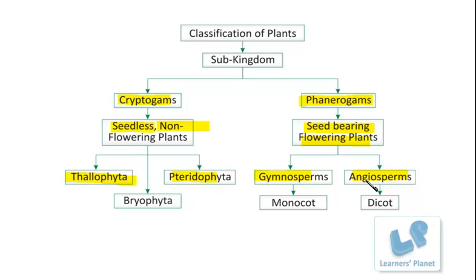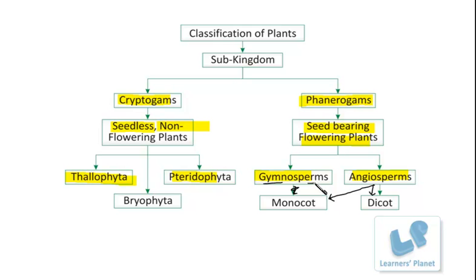Gymnosperms and Angiosperms are divisions. Angiosperms are further sub-classified into monocots and dicots. Gymno means naked and sperms means seed, so in Gymnosperms the seeds are present as a naked structure — they are exposed. Angio means cover or a case, so in Angiosperms the seeds are enclosed inside a fruit. This is how these plants are sub-classified.